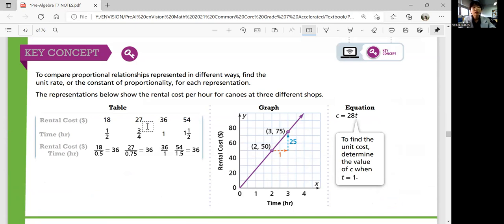So you can either get a table and compare them and get a unit rate. You can look at the graph and get the unit rate by looking at the movement. And then you can look at the equation to figure out the unit rate. So that was lesson 5.